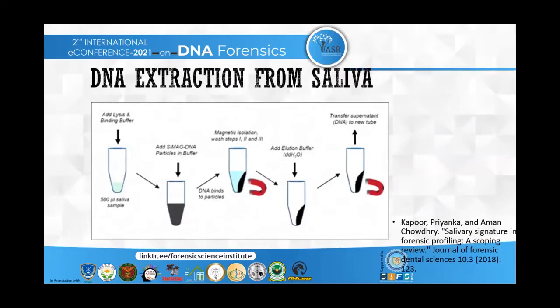DNA extraction from saliva involves first taking the saliva sample, then performing lysis — the breakdown of saliva — with a binding buffer. CMAG DNA particles are introduced into the salivary solution, acting like a magnet to extract the DNA from the saliva.